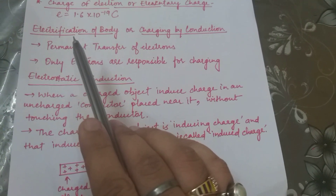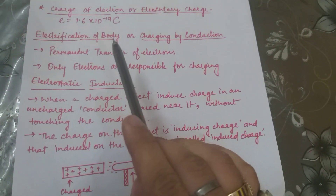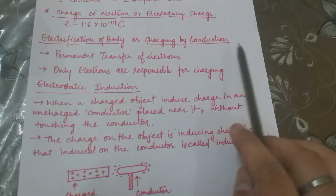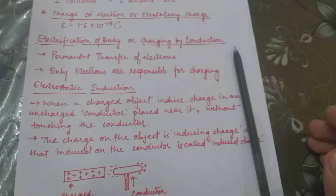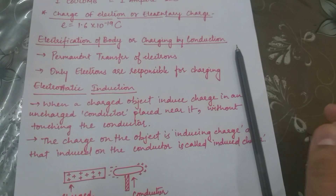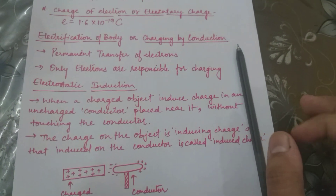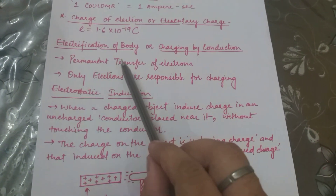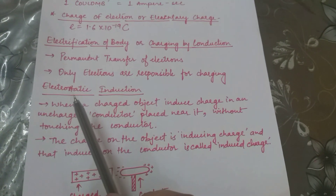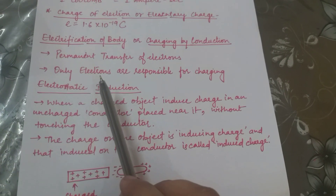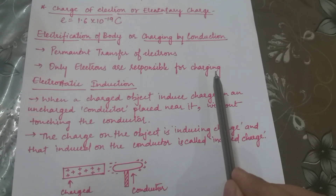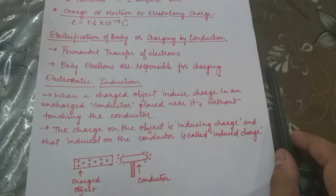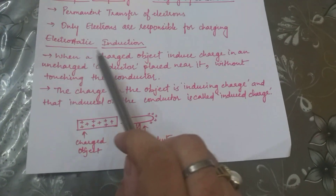Now we have some processes related to the charging of a body. The first is electrification of a body, or charging by conduction. Whenever any object is kept in proper physical contact with another charged body, that body gains some charge. This means there is a permanent transfer of electrons between the two bodies. Only electrons are responsible for charging by conduction.